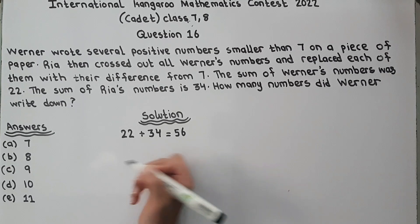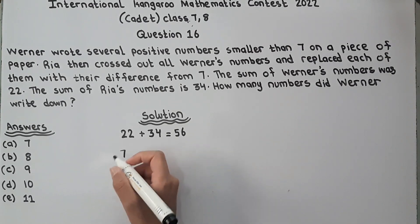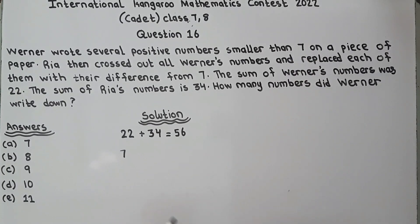Now let's take N a number. N can be any number. She wrote smaller than 7 so we write 7 minus N, because